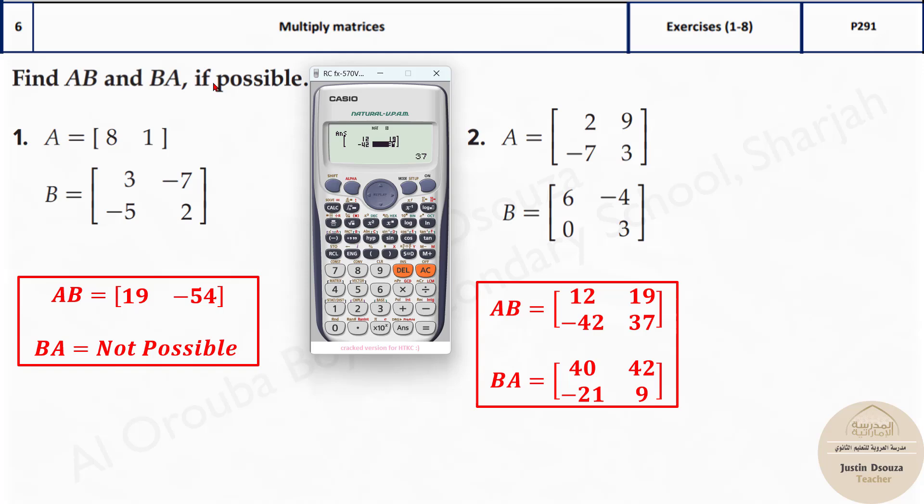Let's just look at the answers. This is the answer, but multiplying B and A is not the same. For that, you need to again press shift 4 and press B, that is option 4, multiplied by shift 4, option 3, that is matrix A. Make it equal. So this is the answer now: 40, 42, minus 21, and 9.